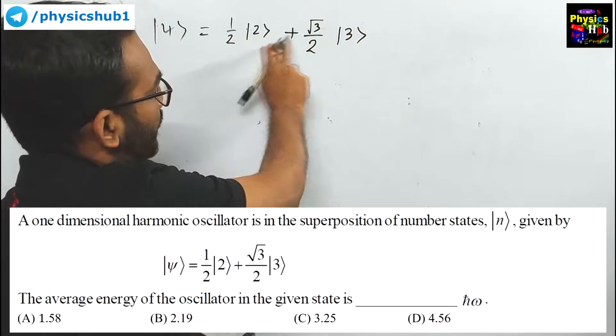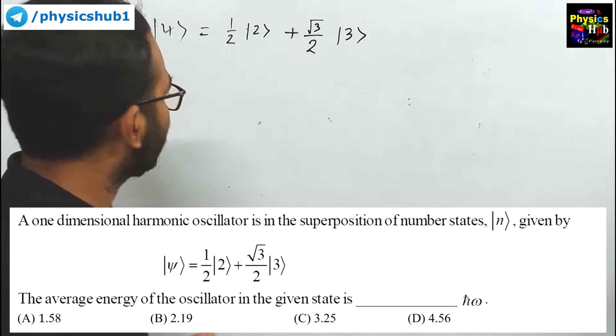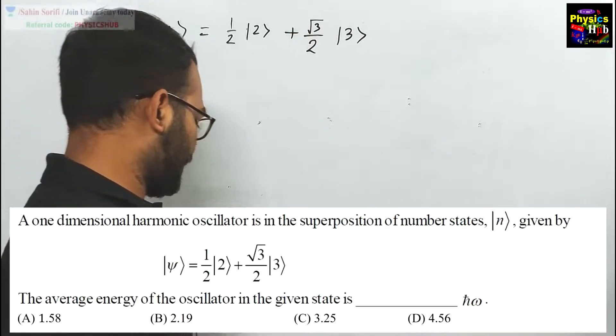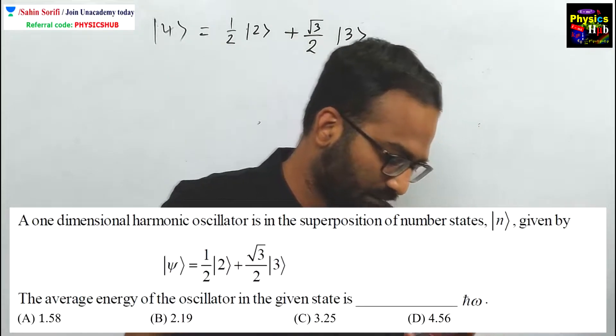It is a superposition of two states, state 2 and state 3. The problem asks for the average energy of the oscillator in the given state.